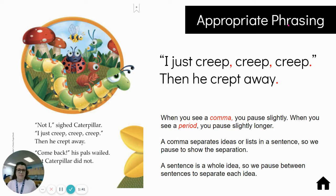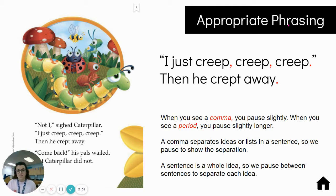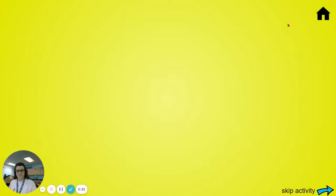Appropriate phrasing — we've recently talked about this as well. That's where you take those pauses when you see commas and punctuation marks. Remember, you pause a little bit longer when you see a period, exclamation mark, or question mark than you do for a comma. A comma is a slightly shorter pause. When you see a comma, you pause slightly. When you see a period, you pause slightly longer. A comma separates ideas or lists in a sentence, so we pause to show the separation. A sentence is a whole idea, so we pause between sentences to separate each idea.